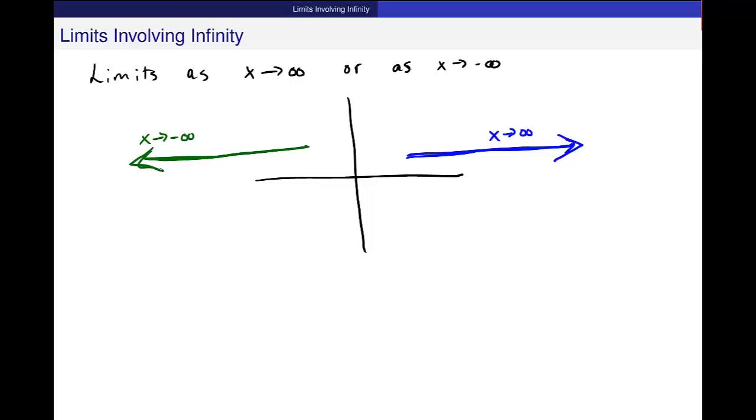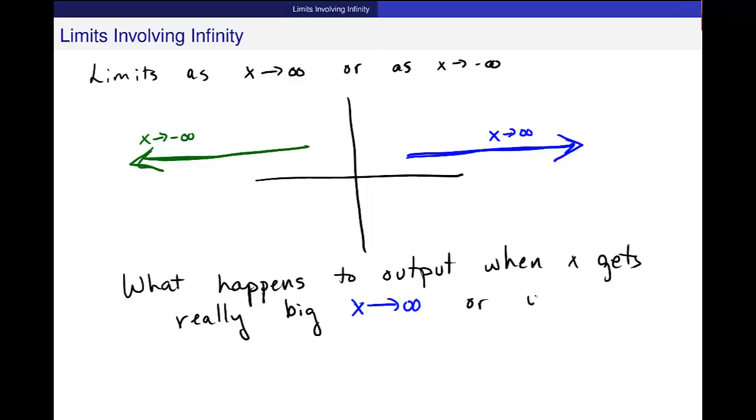That's the question. Don't lose track of that. What happens to output when x gets really big? That's x going to infinity. Or when x gets super negative, x going to minus infinity. That's the question that we want to answer.